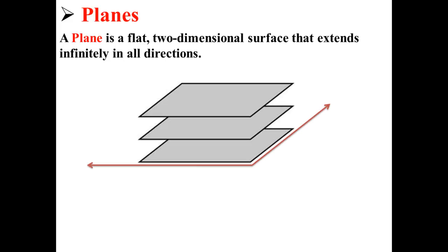A plane is a flat, two-dimensional surface that extends infinitely in all directions. Here we have an example of three different planes. You can see that these are planes because if you look at the red arrows, they extend infinitely in both directions.